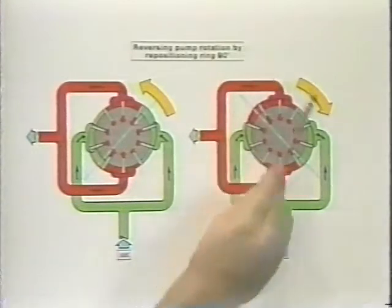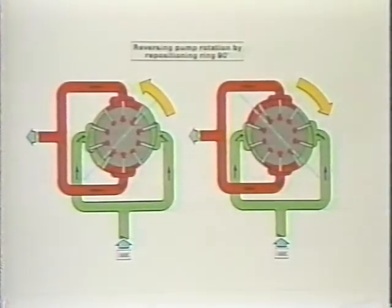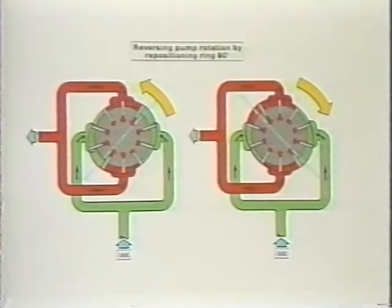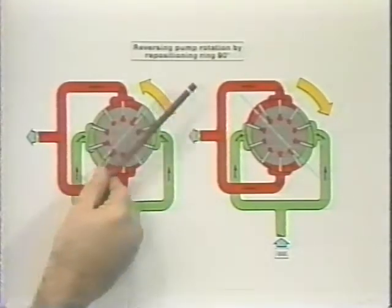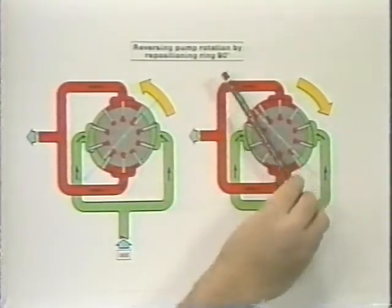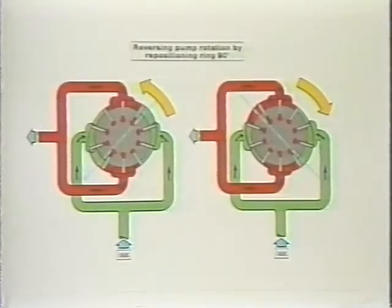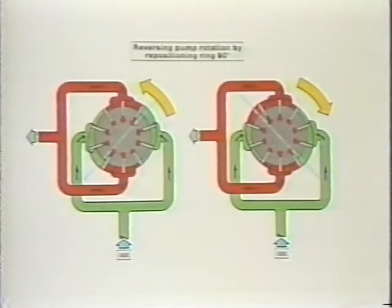Another modification sometimes required is to reverse the drive shaft direction. We would, however, have to ensure that the flow direction within the pump is not reversed. The key is repositioning the ring so that the major diameter of the inner cam is rotated 90 degrees from its original position. By doing this, the pumping chambers will continue to increase in size as they pass the inlet porting and decrease at the outlet, so flow through the pump remains the same even though drive shaft rotation has been reversed.